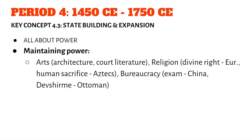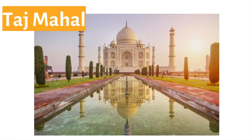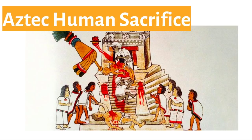Another way people maintain power is through bureaucracy — like the exam system in China, which existed before but also in this time period. We really start to see different ways that bureaucracy allowed one group to be the powerful group, whether through education, passing an exam, or birth order. Here's a picture of the Taj Mahal, built in this time period — if you can build something like that, people are going to respect you. That's a constant throughout history: build big and people will respect you. The Aztecs' human sacrifice is another example of maintaining power.